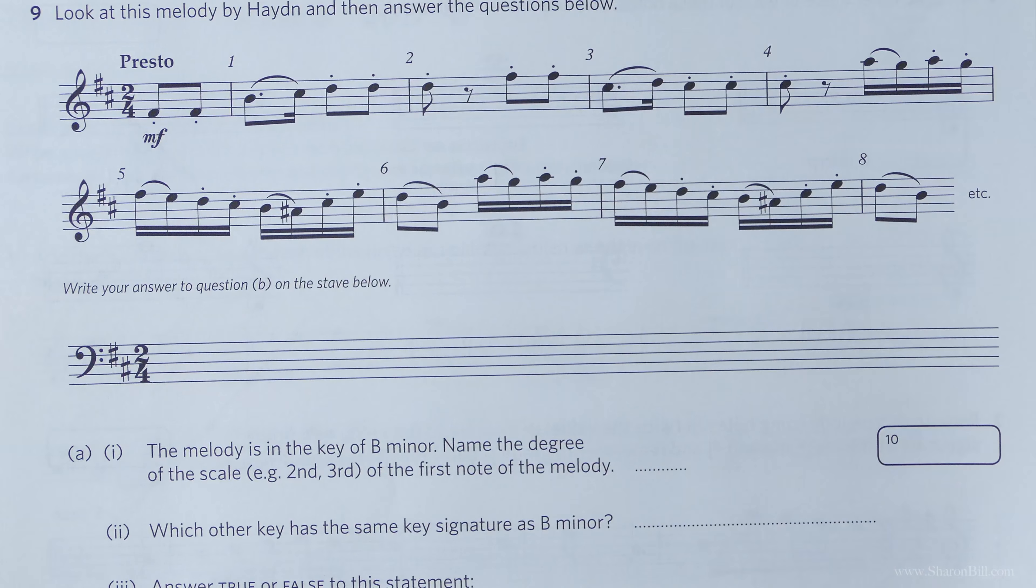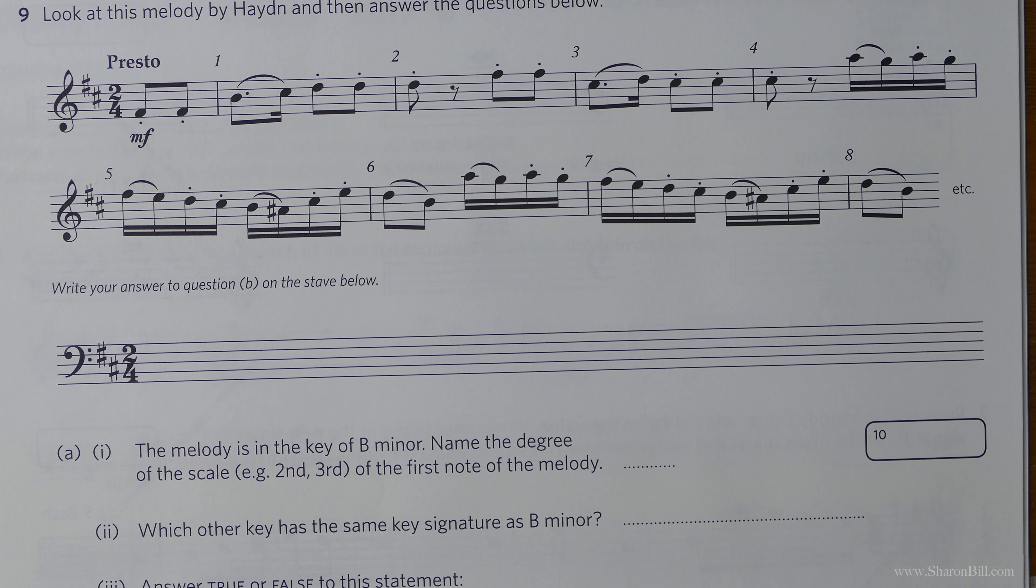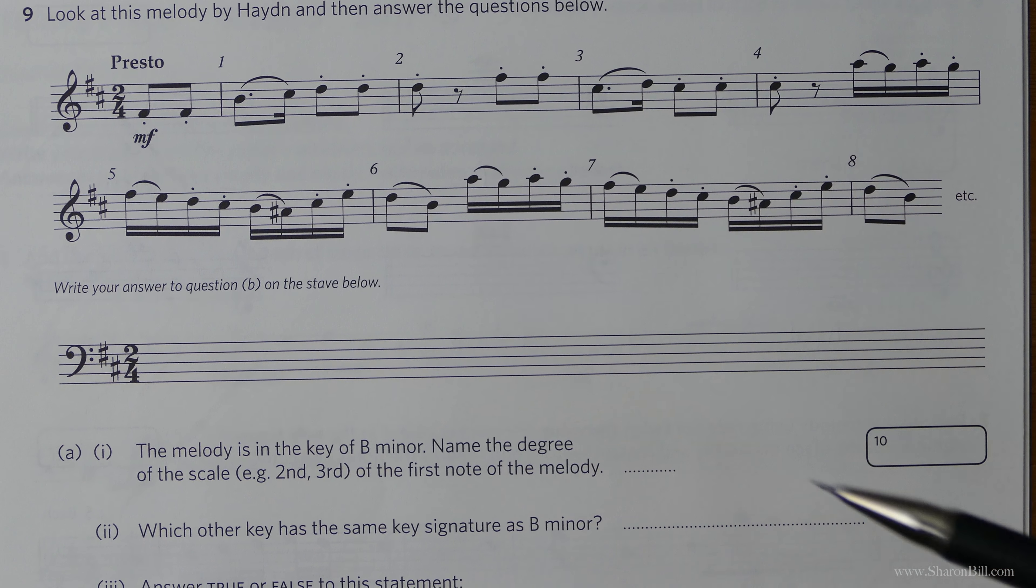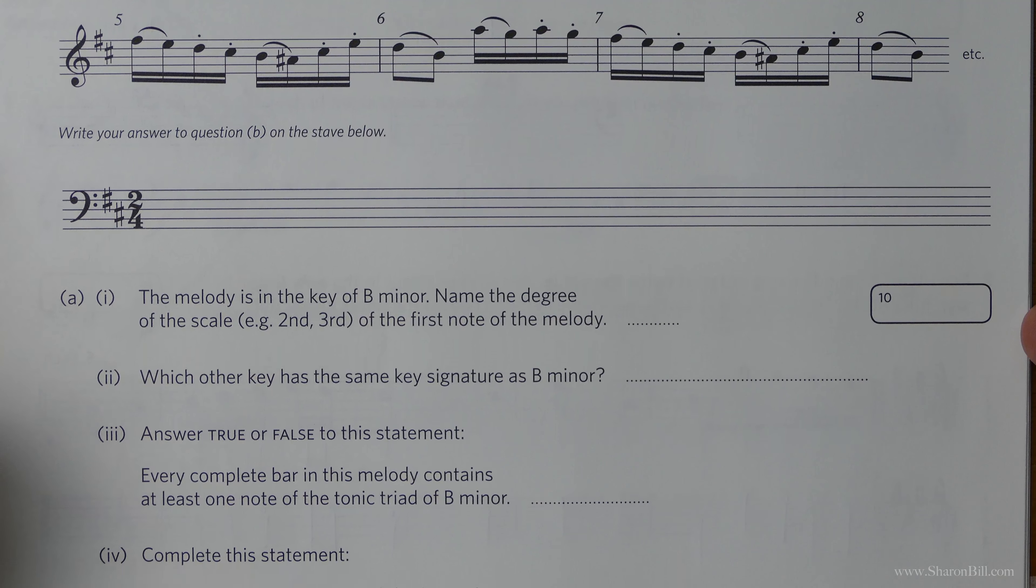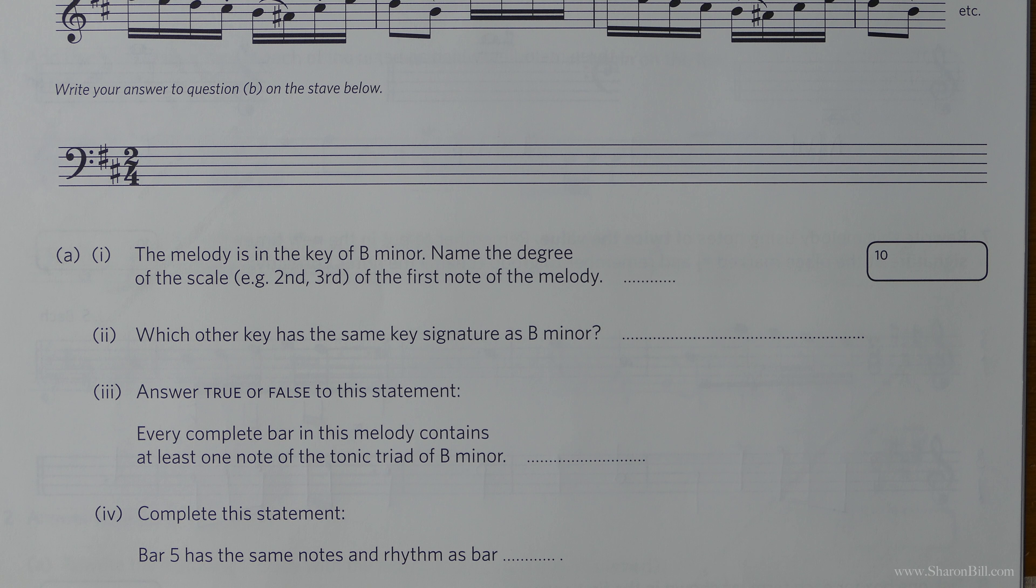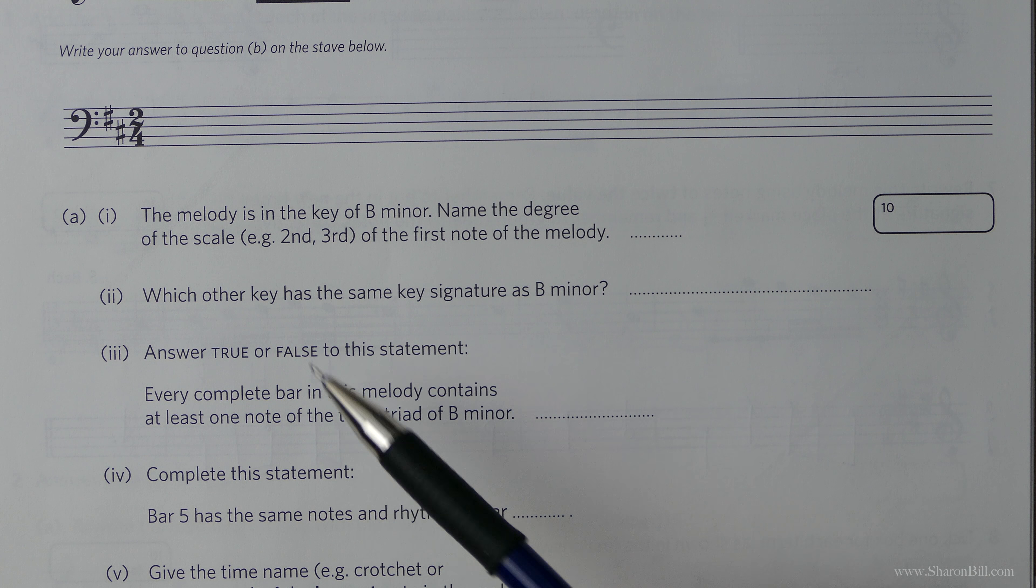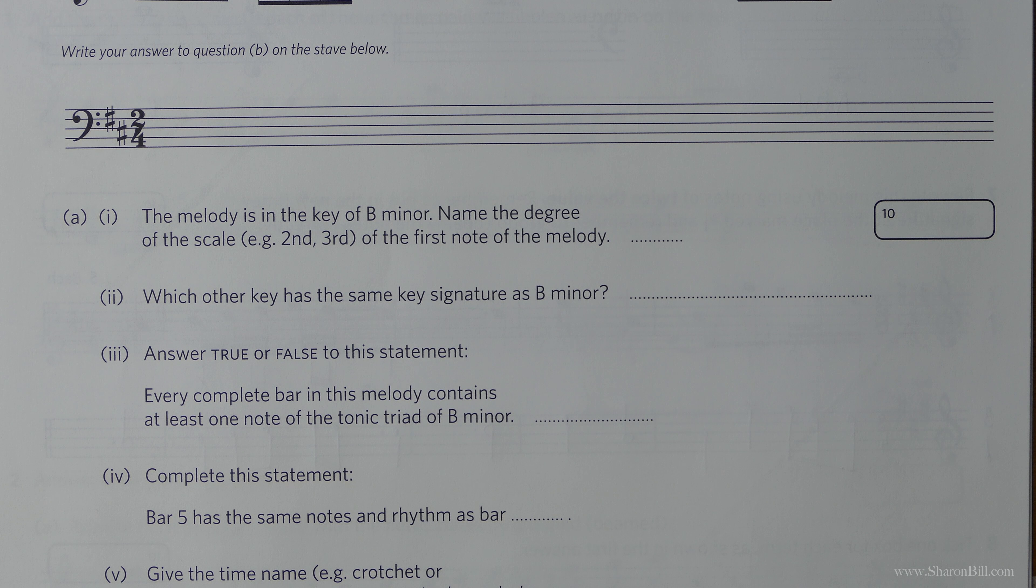We'll turn the page and we'll have a look at the last question nine. A nice little Haydn melody here. And all of the questions are going to be relating to this little extract. The melody is in the key of B minor. Name the degree of the scale of the first note of the melody.